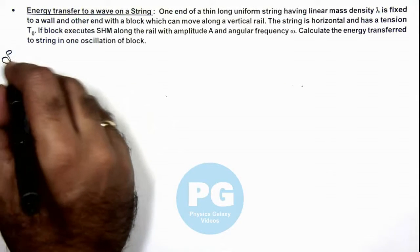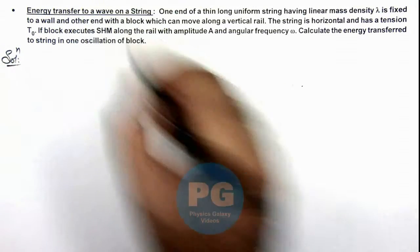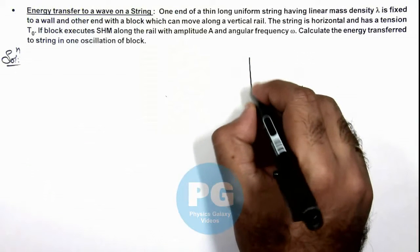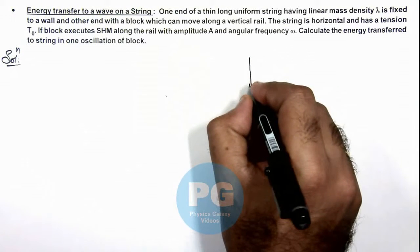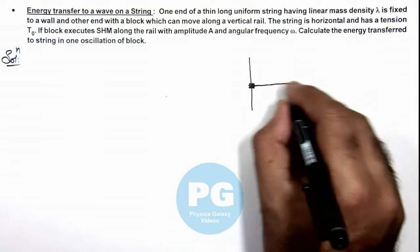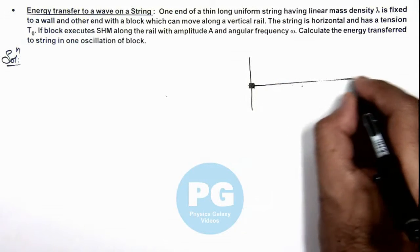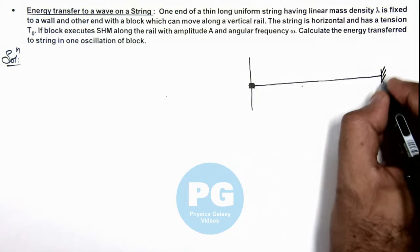Now in this situation if we first draw the picture for better understanding, this is a rail on which there is a block to which a string is connected, and one end of the string is connected to a wall.